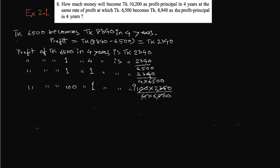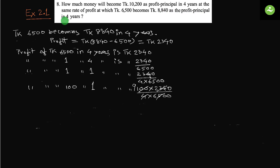Assalamualaikum, greetings from Talent of Skill. Class 8 English version, math exercise 2.1, number 8. How much money will become taka 10,200 as profit principal in four years at the same rate of profit at which taka 6500 becomes taka 8840 as the profit principal in four years? We have to find out the principal.